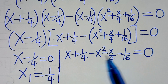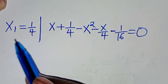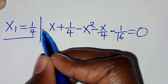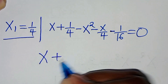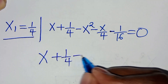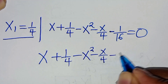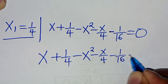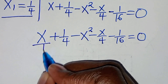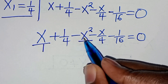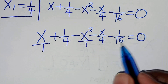Let's solve for the corresponding values of x from the second part, which is x plus 1 over 4, minus x squared, minus x over 4, minus 1 over 16, equals 0. Since x and x squared are whole numbers over 1, the LCM here is equal to 16.